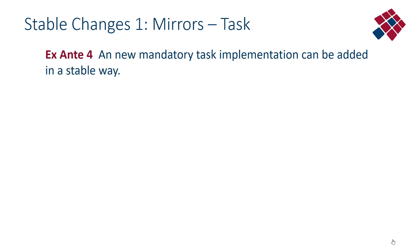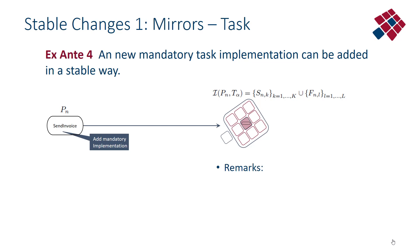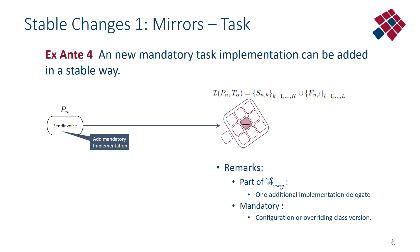You can also perform the requirement change to have a new mandatory task implementation in a stable way. Suppose you have a task entity implemented in a task element. In the case of a new and mandatory implementation — for instance, a new and mandatory protocol to collect data from an IoT sensor — you just have to implement an additional implementation delegate. The marginal set of versions of software constructs consists of this additional implementation delegate, and you can make it mandatory by simply overriding the previous class version or by simple configuration.